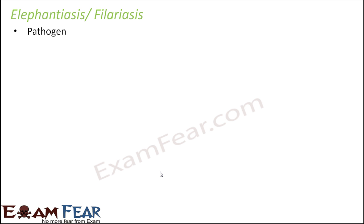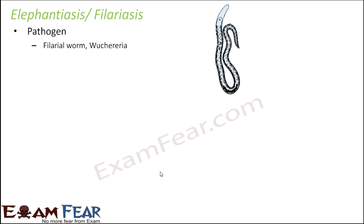Let's now talk about Filariasis, or Elephantiasis. This disease is caused by a pathogen which is a worm — the filarial worm called Wuchereria. So Ascariasis was caused by the roundworm, and Filariasis is caused by the filarial worm.